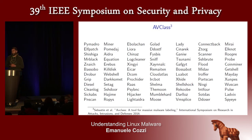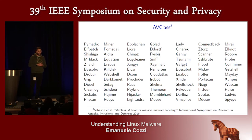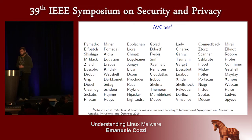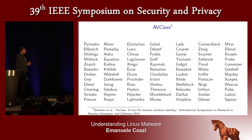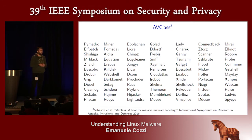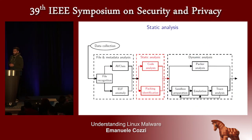We ran AVClass, a tool to extract the most likely family name from a set of AV labels, to understand what classes of malware exist today on Linux and whether they are as broad and diverse as Windows malware. In fact, we saw that we don't have only botnets — we also have ransomware and banking trojans. We then wanted to measure the entropy of the malware and collect metrics on the assembly code.